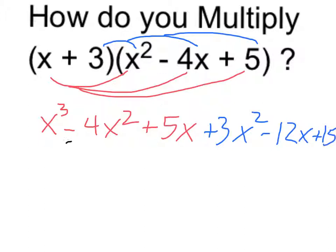This can be simplified a little bit. We have some like terms. Negative 4x squared goes with a positive 3x squared, and that's going to give us a negative x squared. 5x goes with a negative 12x, and that's going to give us a minus 7x.